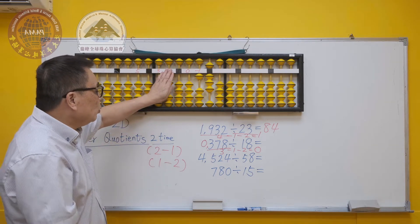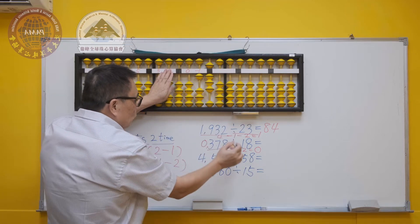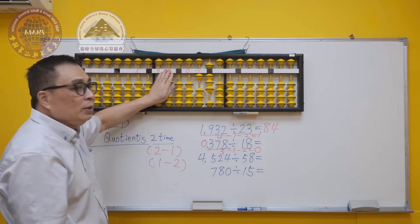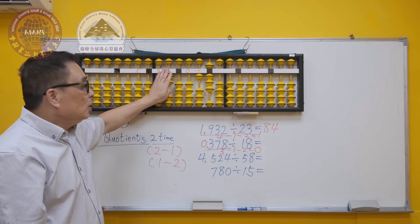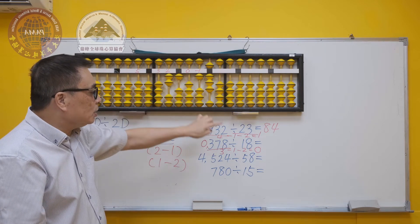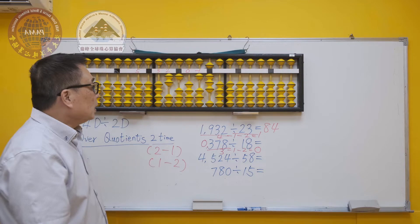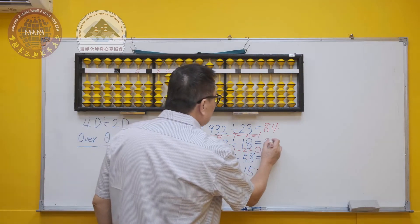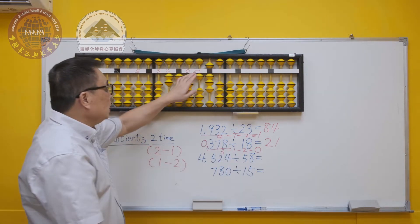The remainder is 18 here, which is perfectly matching the divisor. Hence, the answer is 1, which is placed on the second rod of the left. The final answer is 21.